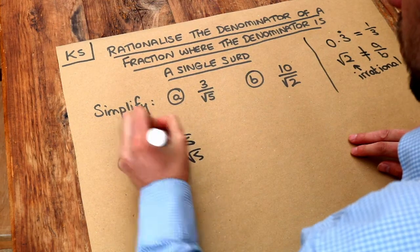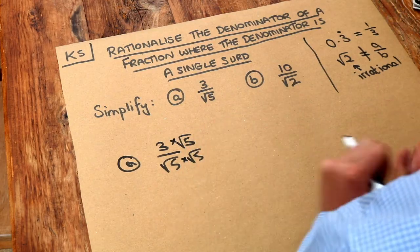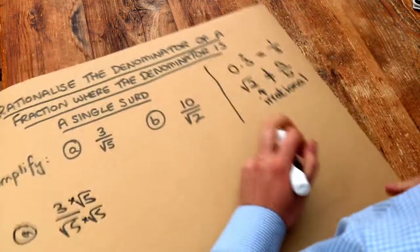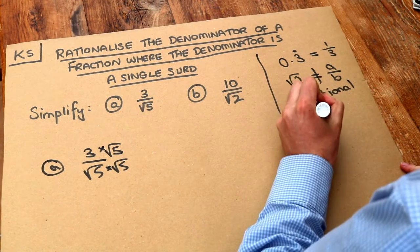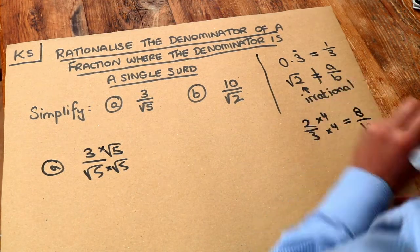Now remember with fractions, as long as you multiply top and bottom by the same thing, it's not going to change the value of the fraction. For example, if I had two thirds and I multiply top and bottom by 4, that gives me 8 over 12, which is the same as two thirds.